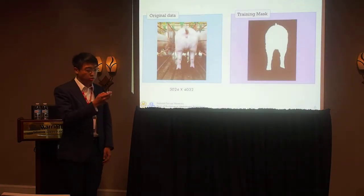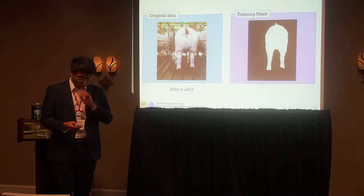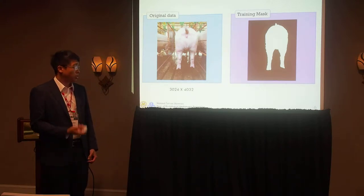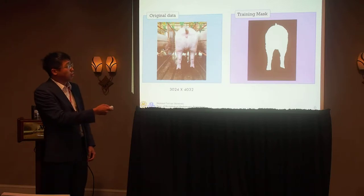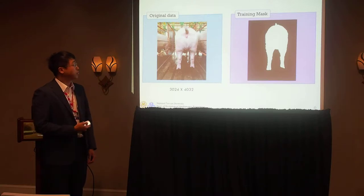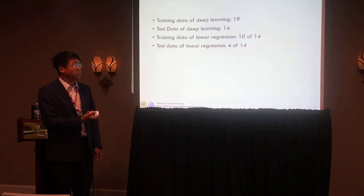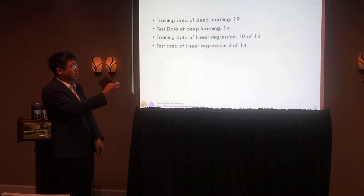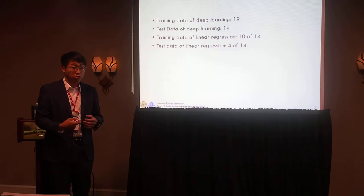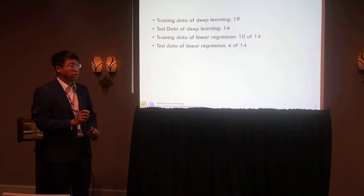I will introduce my materials. The sow images were acquired by a digital camera, with dimensions of 3024 x 4032. This is my training mask, which I labeled manually. The training dataset is 90 images and the test dataset is 40 images. The data was segmented to remove the background. The training data for the linear regression to determine body condition scores is 10 of the 14, and the test data is 40 of the 14.